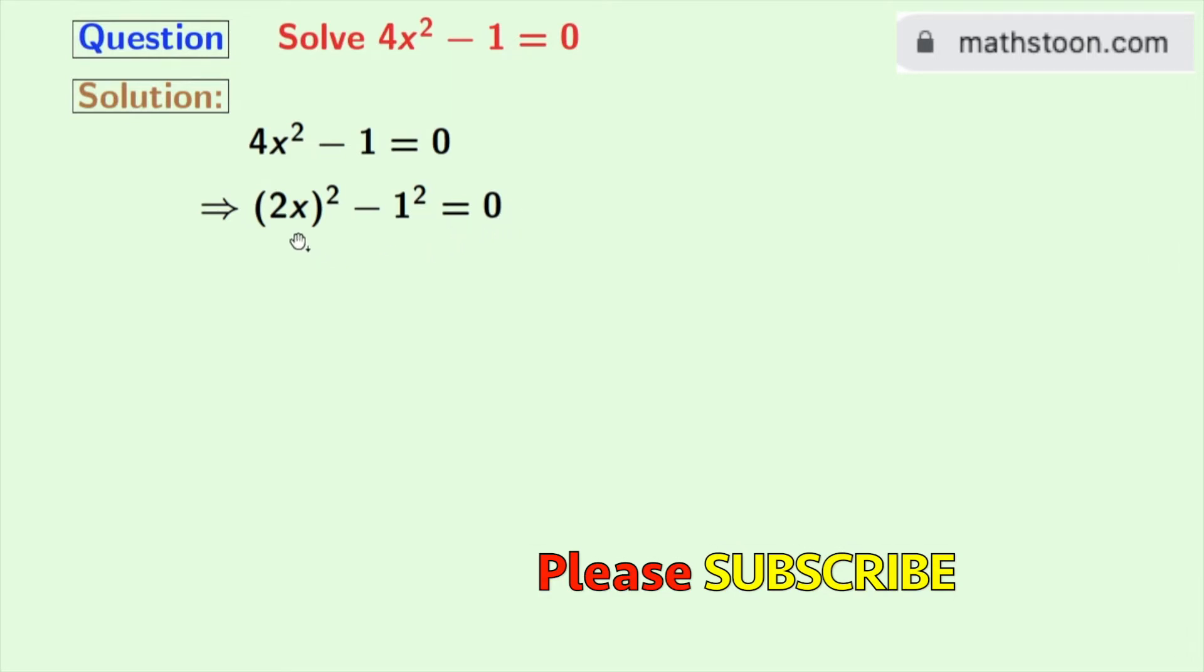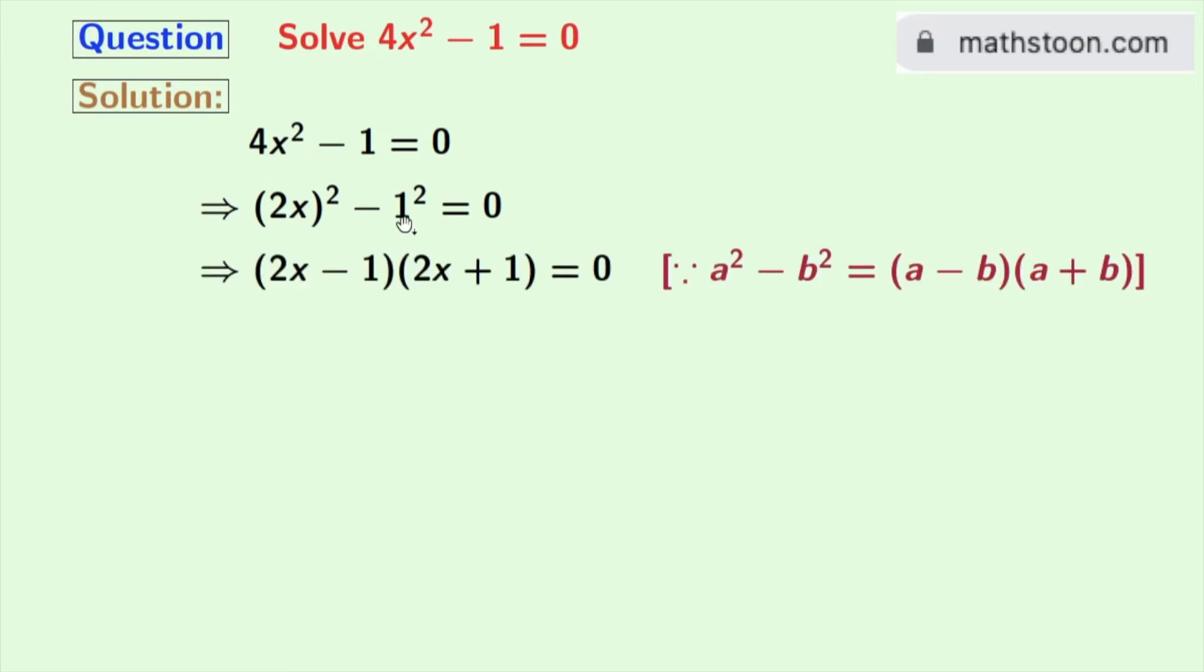The left-hand side is in the form of a² - b², where a = 2x and b = 1. We can apply the formula a² - b² = (a - b)(a + b) to this equation.